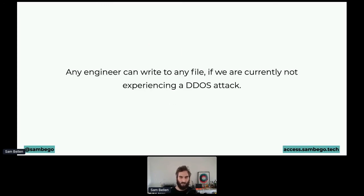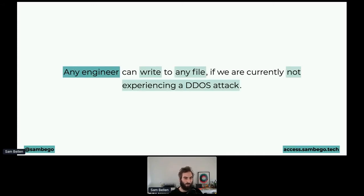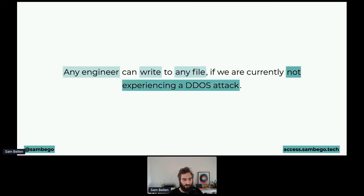To take an example: "Any engineer can write to any file if you are currently not experiencing a DDoS attack." This contains a few attributes. "Any engineer" is a user attribute. "Write" is an action. "Any file" is a resource. And "not experiencing a DDoS attack" is an environmental attribute — our current threat level. You don't have to have all four attributes present. You can mix and match them and combine them to form a very strong policy.